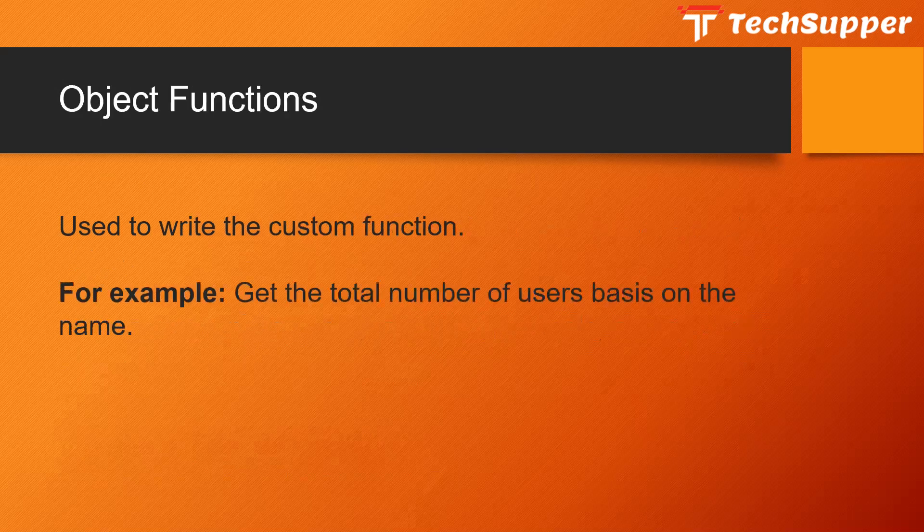Object functions are very helpful — they are used to encapsulate logic. You can write custom logic and call these functions wherever you want. For example, on an employee business object with a name field, you can write a custom function to get the total number of users based on a particular name, then call that function to retrieve the count.